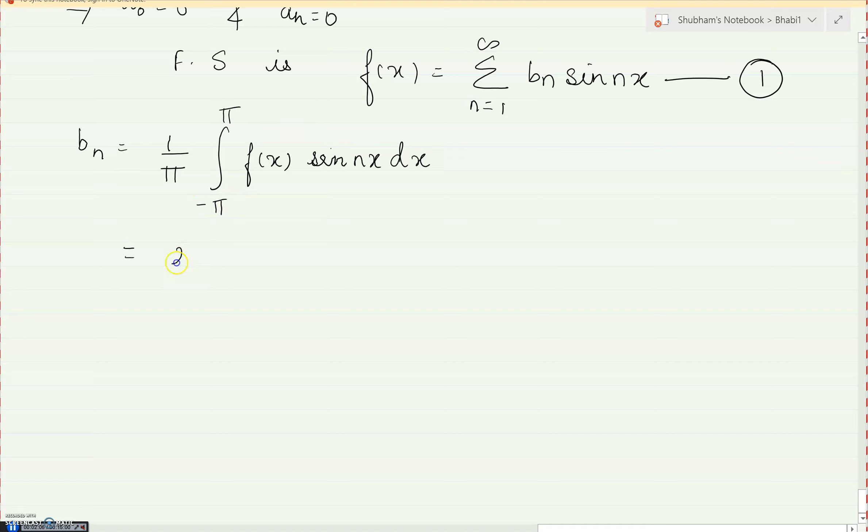Now the limits of integration will be minus pi to pi. Also you can write this as the formula which I have explained in the earlier lecture also. So you do by this formula or you do by this formula, the answer will come the same. So any one is okay for you. So now we can write 2 by pi, 0 to pi. What is my f of x? x cube sin nx.